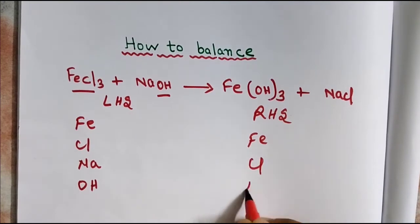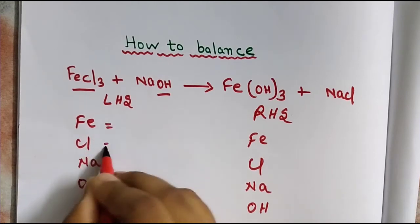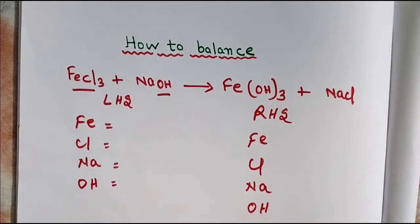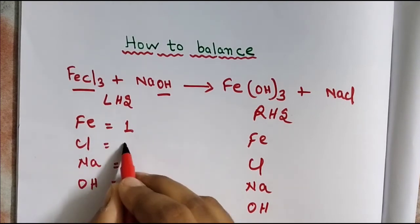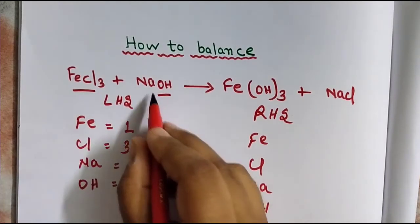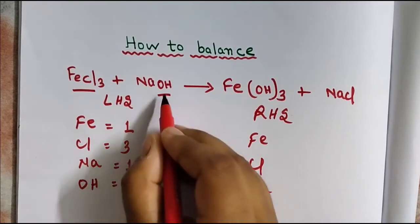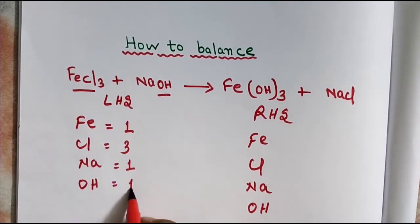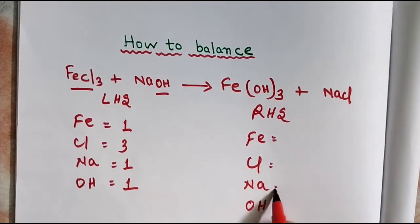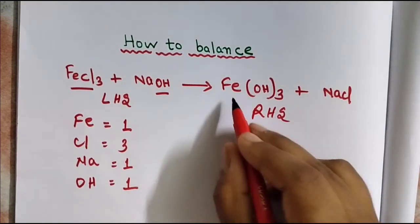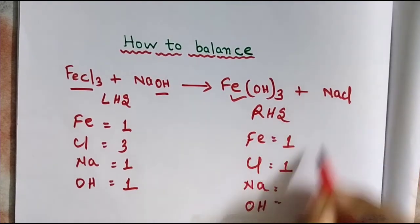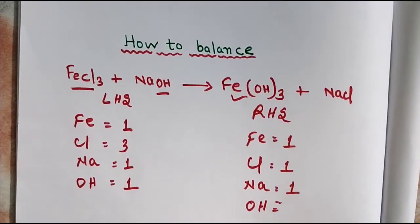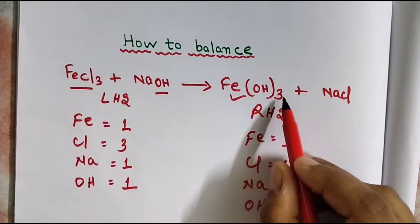Now count the number of atoms of each for both sides. Here: iron is 1, chlorine is 3, sodium is 1, and hydroxide is 1. For RHS: iron is 1, chlorine is 1, sodium is 1, and hydroxide, 1 times 3, so 3 hydroxide.